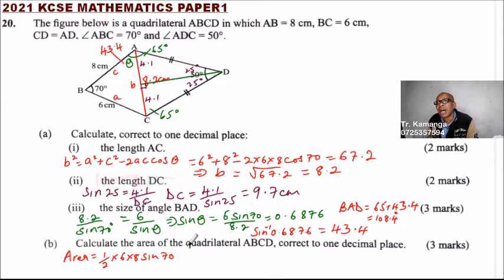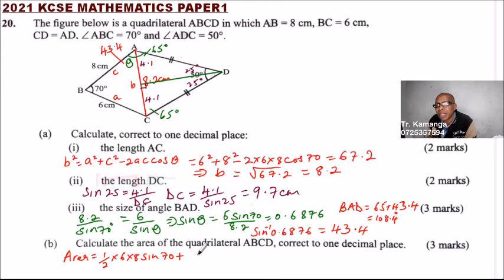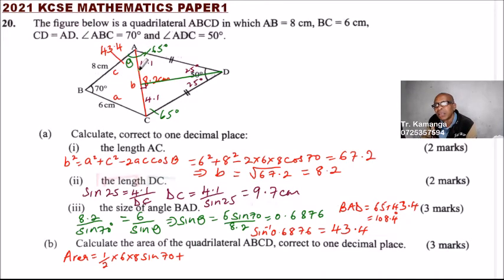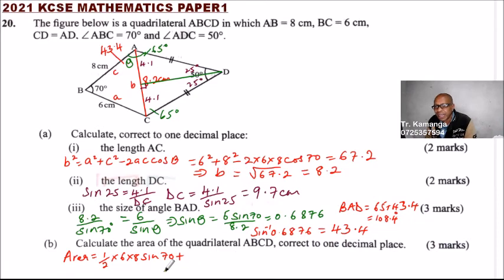Then we add the area of triangle ADC. We can use the half base times height formula. We have the angle and the sides, so we can get the height.